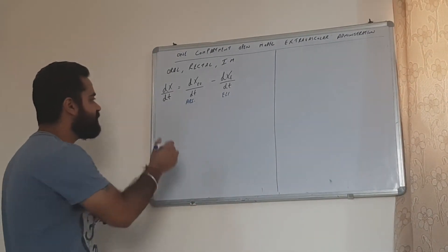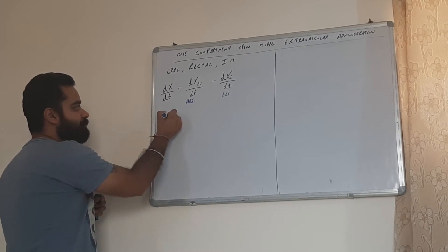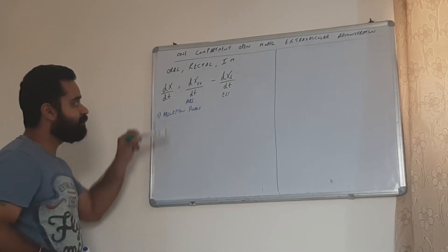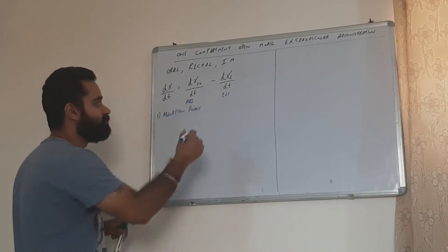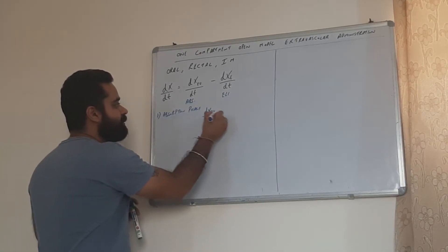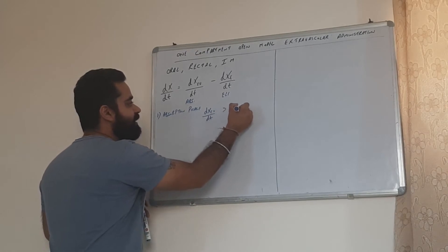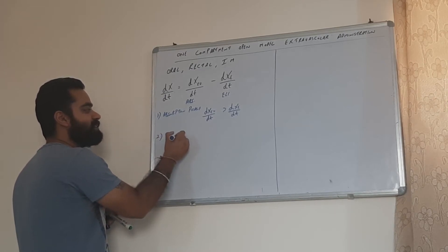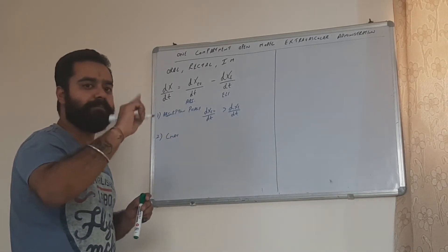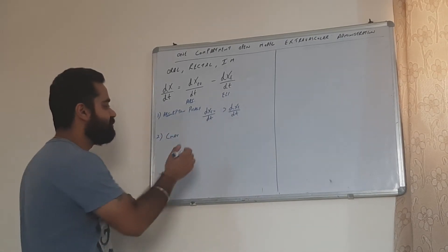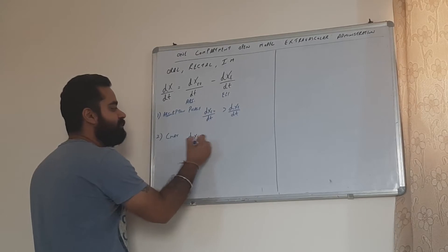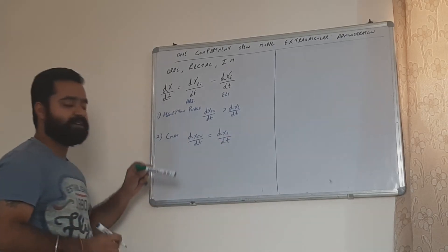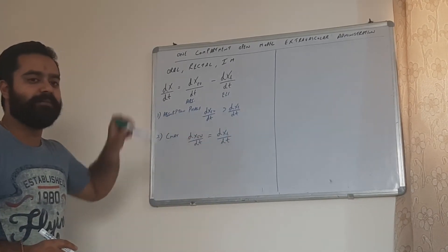We have three cases. The first case is the absorption phase. In the absorption phase, the rate of absorption is higher than the rate of elimination, which means dx_ev/dt is more than dxe/dt. The second case is Cmax — the peak plasma. At this point, dx_ev/dt is equal to dxe/dt, meaning the rate of absorption equals the rate of elimination.